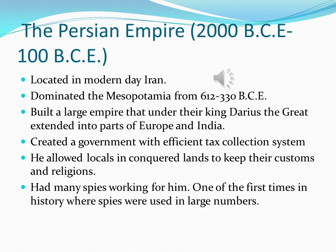The Persian Empire was located in modern day Iran. It dominated Mesopotamia from about 612 to about 330 BCE. Under their king Darius the Great, it built a large empire that extended into parts of Europe and India. It created a government with an efficient tax collection system. Darius allowed locals in conquered lands to keep their customs and religions, which was very important because it decreased the possibility of rebellions. He also had many spies working for him — one of the first times in history where spies were used in such large numbers on such an organized scale.